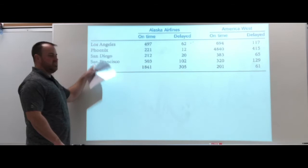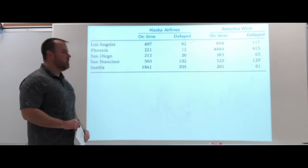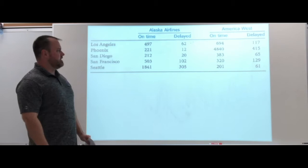Over here we have the city that we're flying out of. So this is actually a three-way table. There are three variables, so it's considered a three-way table.